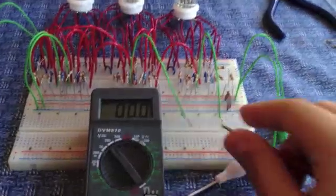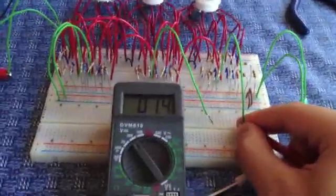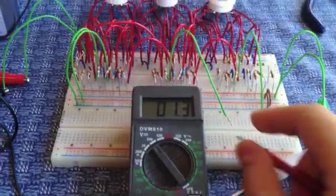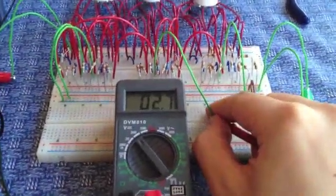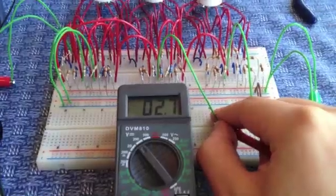In this logic system, a 1 is represented by a voltage below 2 volts, and a 0 is represented by a voltage above 2 volts.